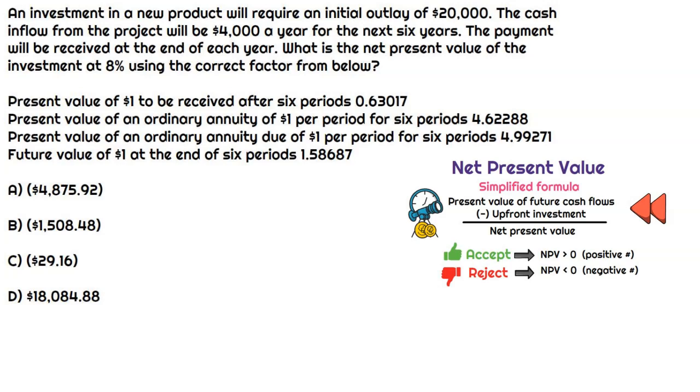So let's dive in to the calculations here. So the first sentence tells us that there's an initial outlay of $20,000. Now, that's going to be the upfront investment. As I mentioned, we don't need to apply a present value factor there. But what we will need to do is figure out what the net present value of the annual cash flows will be. It tells us it's $4,000 a year for the next six years. Now, the next sentence tells us something very important, and that says the payment will be received at the end of each year.